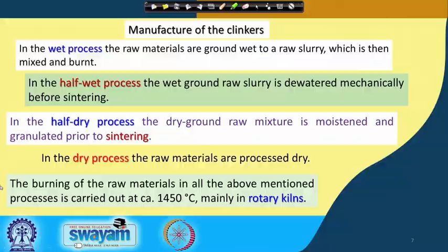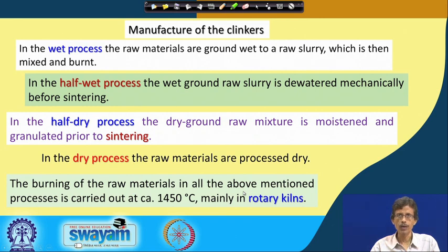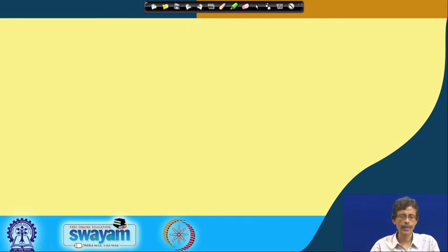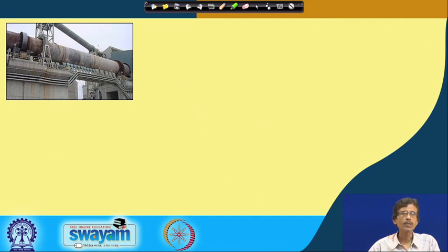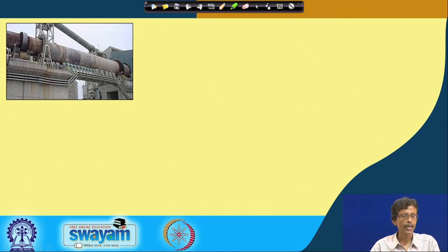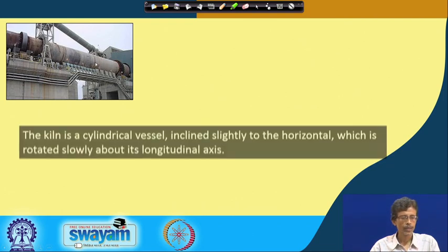Welcome back. We are talking about rotary kilns, which are the basic component for making cement in the industry. This is the corresponding figure for your rotary kilns — you see that huge horizontal kiln-type arrangement, then basically jaws and levers are there, and those will be utilized for making the cement.